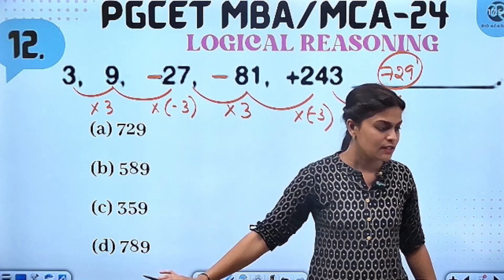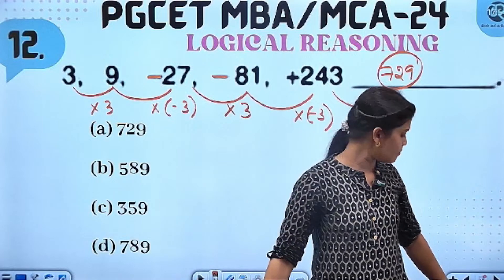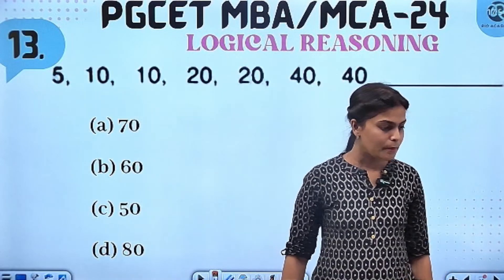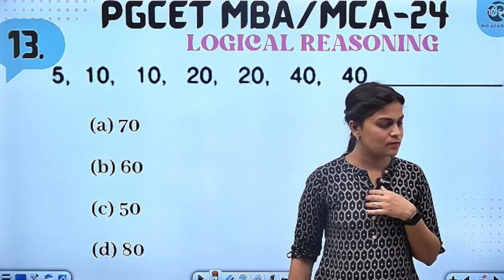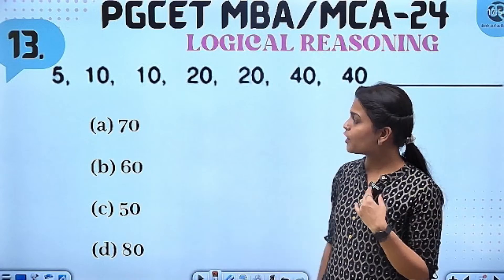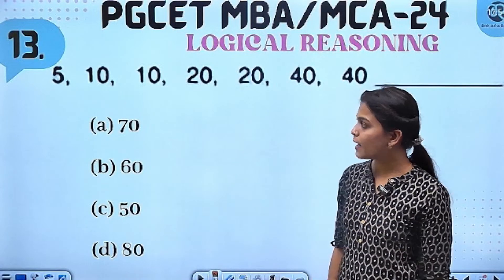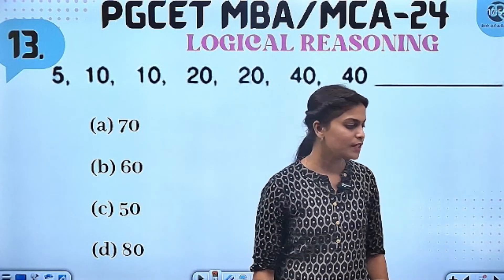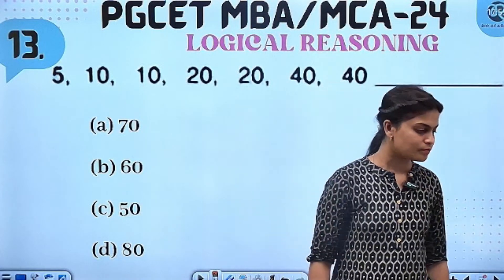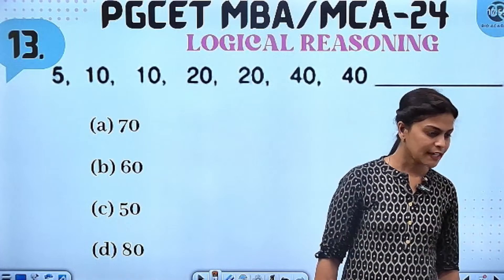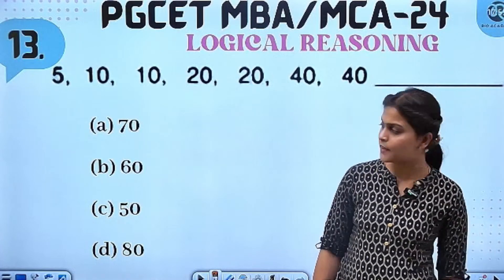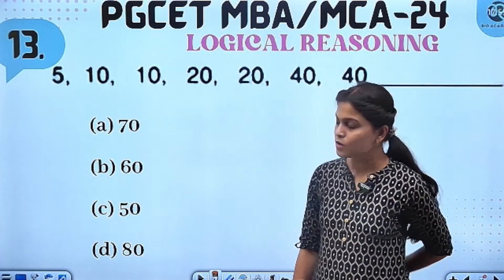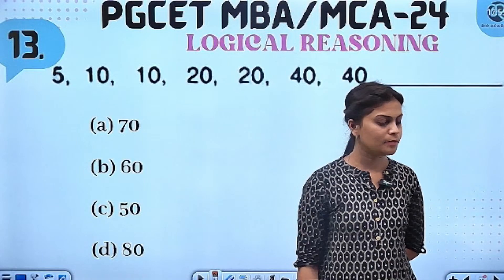Clear? Yes, Hashita. Gautam. Yes. So, next question: 5, 10, 10, 20. Yes. Answer — how should it be? Right? So, option A, B, C, D.